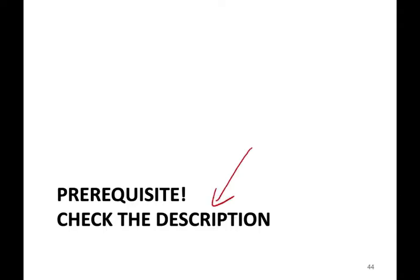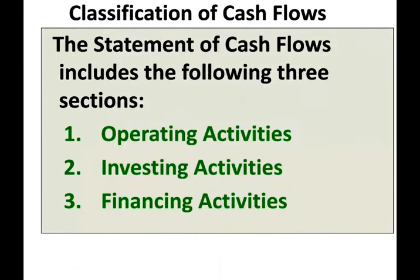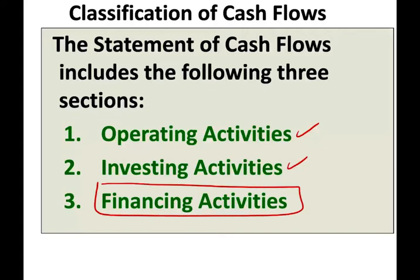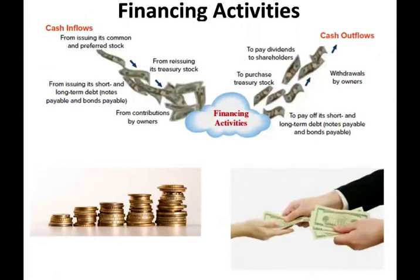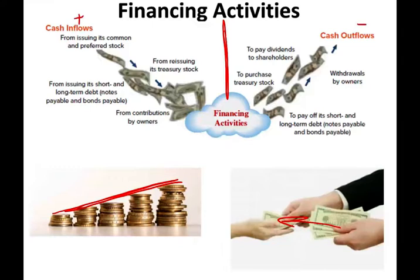If you'd like to see the prior prerequisite for this recording, check the description, because the statement of cash flow consists of three sections: operating, which was already done, investing, and in this section we would look at the financing section. When you think of the financing section, think of either raising money or paying back money to the investors. You have an inflow of cash and you have an outflow of cash.